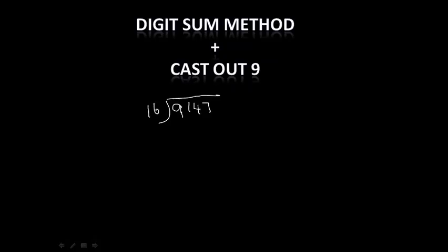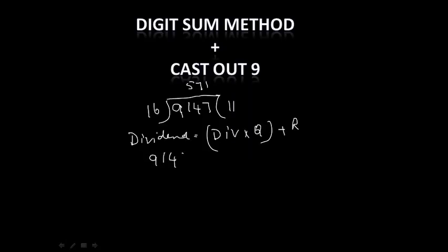So what is the answer we got? We got 571 as the quotient and 11 as the remainder. So here we apply the same rule: dividend is equal to divisor multiplied by quotient plus the remainder. So here we need not add everything, we can cancel out 9 or any group of numbers summing up to 9, we can leave it out and then we can add the remaining thing.